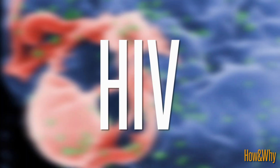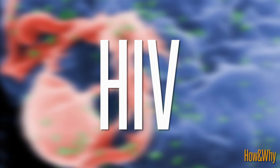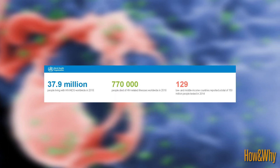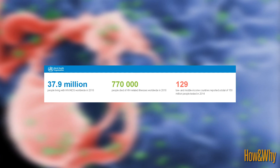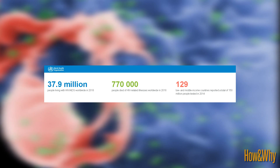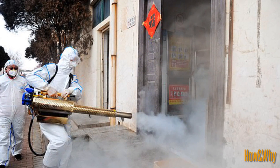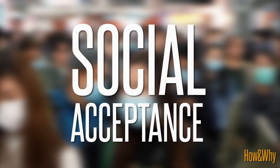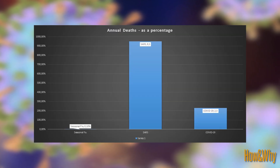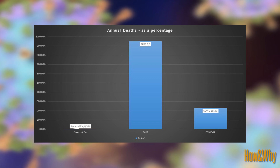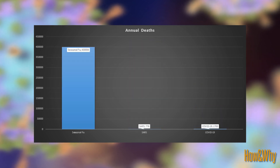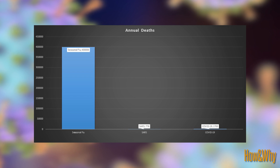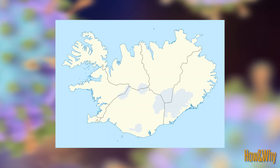HIV is among the deadliest viruses, with an estimated 36 million people having died from it since the disease was first recognized in the early 1980s. No recovery treatment is available, although we know how it spreads, making us more comfortable socializing compared to other less-understood viruses. Social acceptance plays a significant role in how we deal with a virus. For example, seasonal flu has a mortality rate below 0.1%, but it infects so many people worldwide that around 400,000 deaths per year are attributable to flu — roughly equal to the entire population of Iceland or the state of Wyoming.